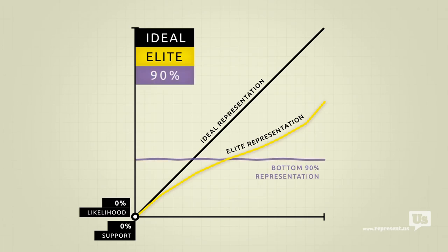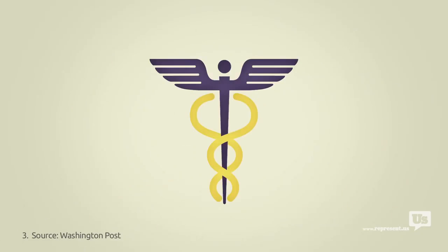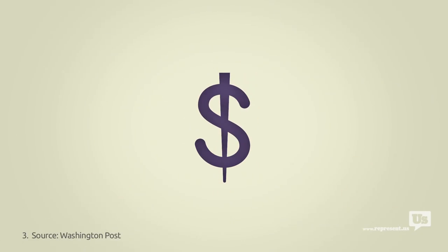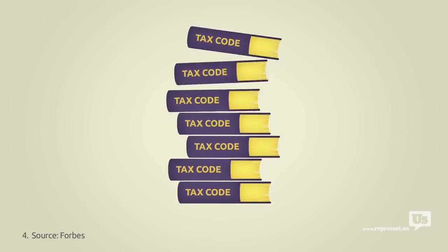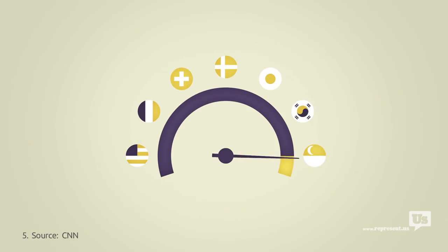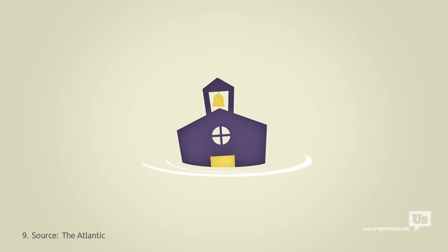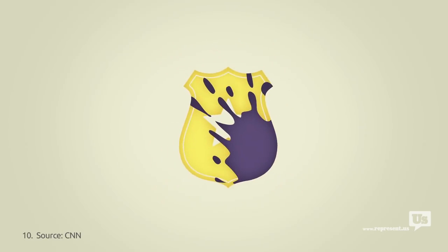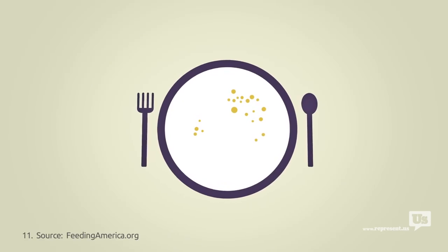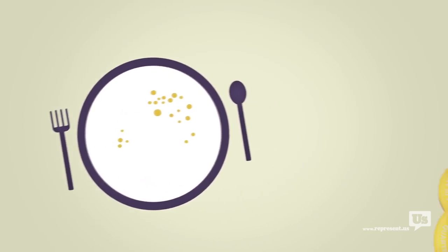We pay for it with the most expensive healthcare in the world. We pay for it with a tax code that's a complete mess. We pay for it with internet that's slower and more expensive, with wasteful spending, a floundering education system, a catastrophic drug war, and one in five American children born into poverty. Almost every major issue we face as a nation can be traced back to this graph.